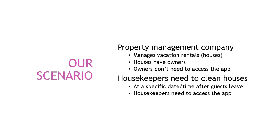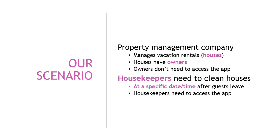Any guesses? Well, first, we need something to represent the houses. Houses have owners — we need some way to represent them. Obviously, we need to account for the housekeepers. And then lastly, we need something to represent the specific date and time, kind of like an appointment for the housekeeper to do cleaning. So just going through your scenario or a list of requirements is a good way to figure out which entities you need. Go through and think of the things or objects required for the application to function.